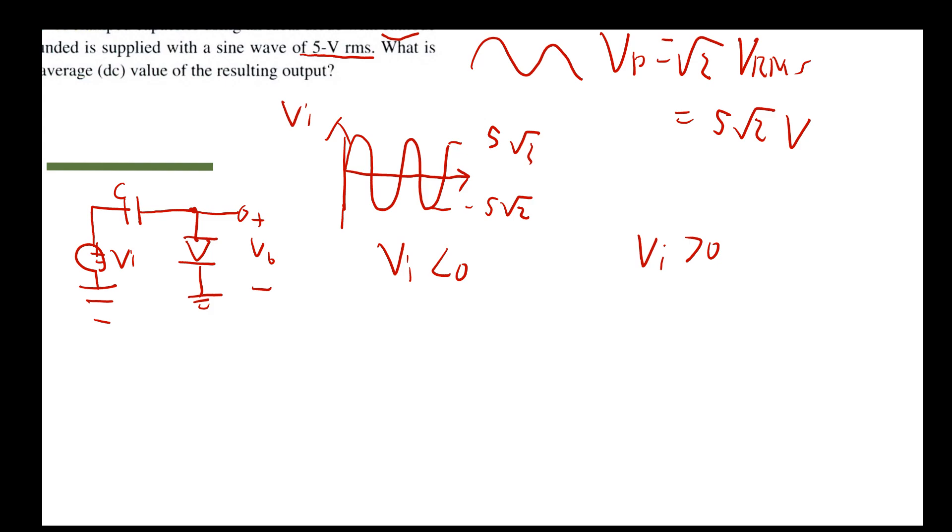based on the physics of a capacitor, once we reach the maximum voltage, it's going to behave as an open, right? It's fully charged. And that means it is taking all of the input voltage, meaning that V out will equal 0 because it is behaving like an open.